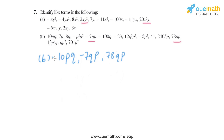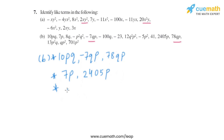The next term is 7P, and its like term is 2405P, so 7P and 2405P are like terms. Then, 8Q has variable Q with power 1, and its like term is minus 100Q, so 8Q and minus 100Q are like terms.